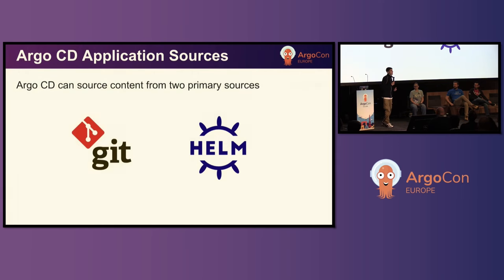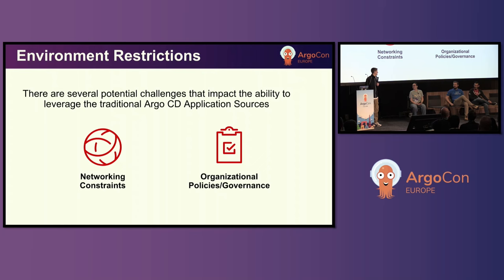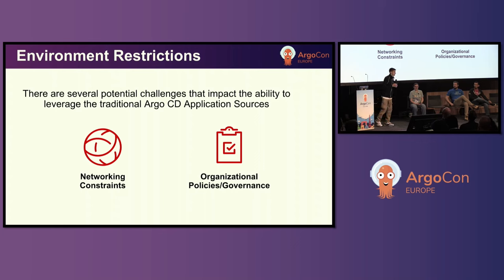Most of us know there are two primary sources for applications in Argo: it's either going to be Git or Helm. Now certainly everyone has access to either a Git repository or a Helm repository — right? But maybe not. Maybe you're in certain environments where those aren't available, maybe there are some networking constraints, firewall rules, or regulations.